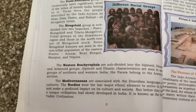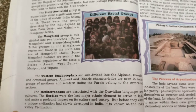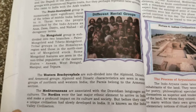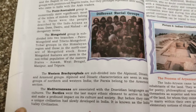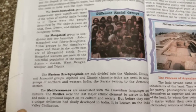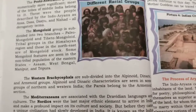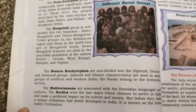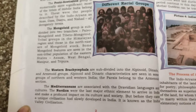The Western Brachycephalids are subdivided into three groups: Alpinoid, Dinaric and Armenoid. Alpinoid and Dinaric characteristics are seen in some groups of Northern and Western India. The Parsis belong to the Armenoid section. The Mediterranean group is associated with the Dravidian language and culture — the South Indian people.